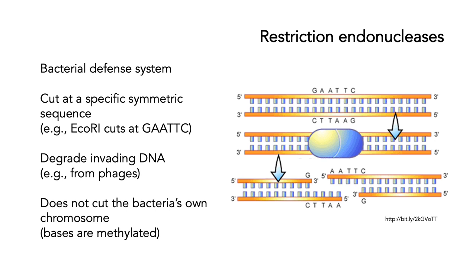But what if your disorder has a mutation that doesn't give a size difference? Then we can use restriction endonucleases. These are important enzymes that occur naturally as part of the bacterial defense system — they cut at a specific symmetric sequence. For example, EcoRI cuts at the DNA sequence GAATTC. In nature, bacteria use these to degrade the DNA of invading phages, but they don't cut the bacteria's own chromosome because its bases are methylated.